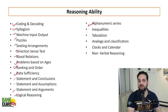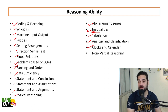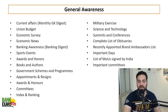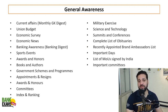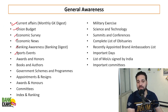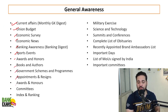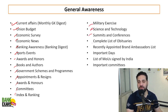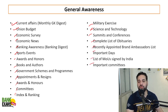We are also going to cover alpha-numeric series, inequalities, tabulation, analogy, clock-based questions, and non-verbal reasoning. In General Awareness, the first section is Current Affairs covering Union Budget, Economic Survey, economic news, banking news, sports events, awards and honors, books and authors, government schemes, appointments, committees, indices, military exercises, summits and conferences, obituaries, brand ambassadors, important days, MOUs, and important committees.